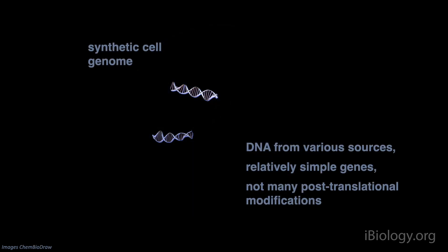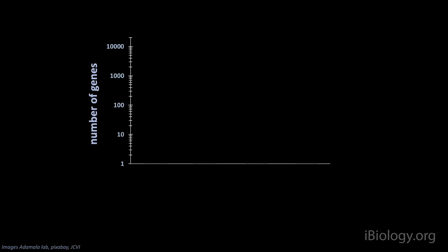Just like natural life, synthetic cells express proteins from DNA genomes. Those genomes are usually relatively simple, up to a dozen genes at a time. To look at the scale of engineering we're talking about, we can compare genome sizes of natural and artificial cells.